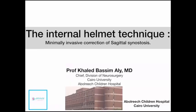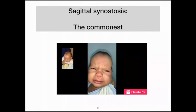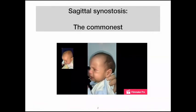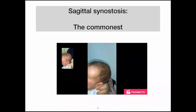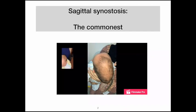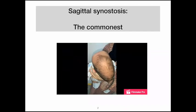Thank you very much for the nice presentation and for allowing me to share my modest experience. This sounds a little different — everybody talks about the helmet, but my technique is different and I call it the internal helmet technique, and I'm going to explain why. Sagittal synostosis is the commonest form of synostosis, characterized by a large head in the front and a very narrow, pointed head in the back. That's why sagittal means an arrow — the head is broad in the front and narrow from the back, which is totally opposite to normal.